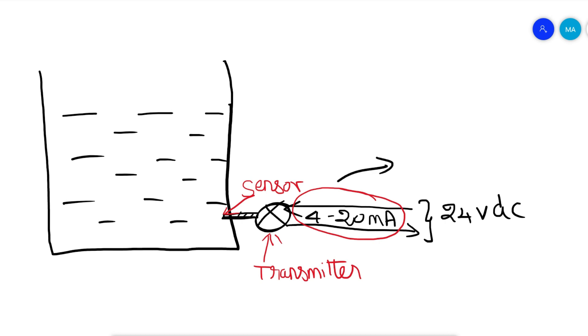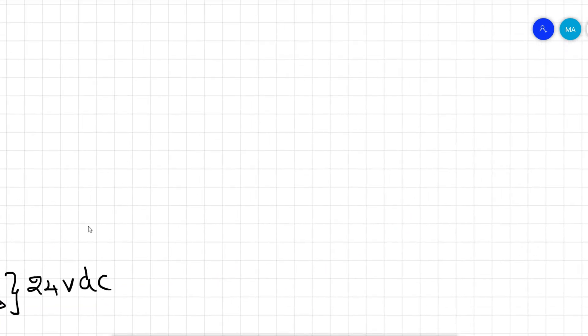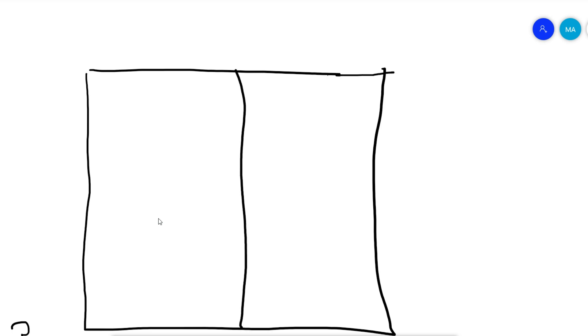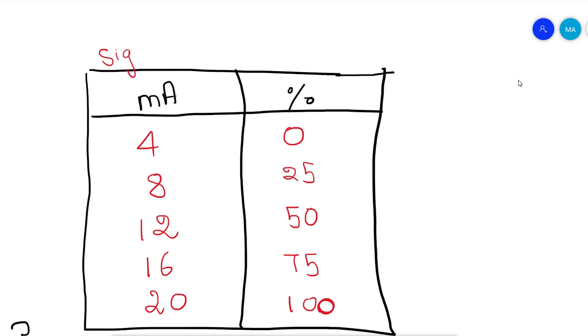So why should we use 4-20 milliamps signal? We know that a process parameter is sent as 4-20 milliamps signal from field to control room. This is how the percentage is related with 4 to 20 milliamps: 4 milliamps equals 0%, 8 milliamps equals 25%, 12 milliamps equals 50%, 16 milliamps equals 75%, and 20 milliamps equals 100% of the process parameter.